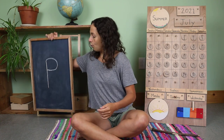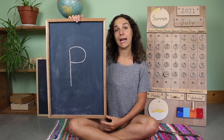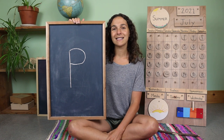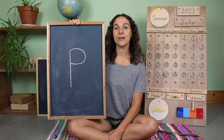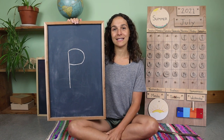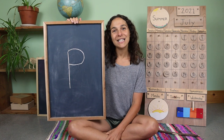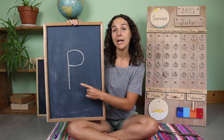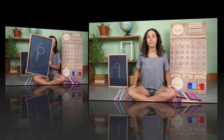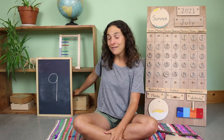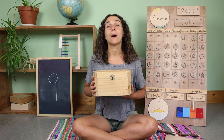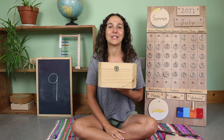Yesterday we started talking about this uppercase or capital letter. Do you remember the sound that this letter makes? And which letter is this? P. That's right, this is an uppercase or capital P. P says P. I wonder what we'll find inside of the letter box today. It's something that starts with the letter P. Here's your first clue.